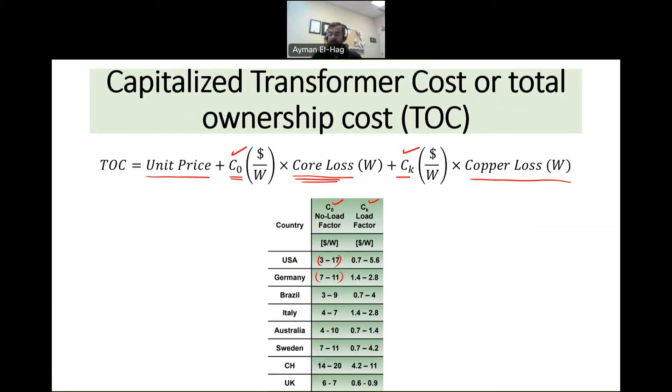So it's clear now we understand that when we buy the transformer the core loss is very important for the long term because it is 24/7. But the copper loss also is important and we consider it also in this capitalized formula. However, the factor we use to multiply the copper loss to calculate the cost should be much less than the factor we use to multiply the core loss.